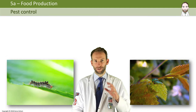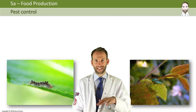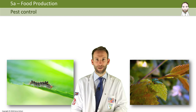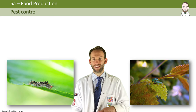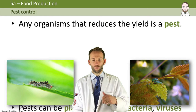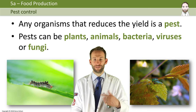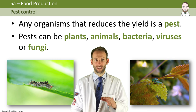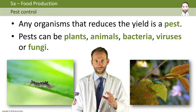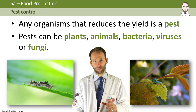Now, pests are a big problem. If you grow crops, the last thing you want is pests coming in there and wiping out all your yield. Pests can be plants, other plants, weeds, animals, bacteria, viruses or fungi. There's all sorts of things that you've got to fight off if you're trying to make your farming process as efficient as possible.